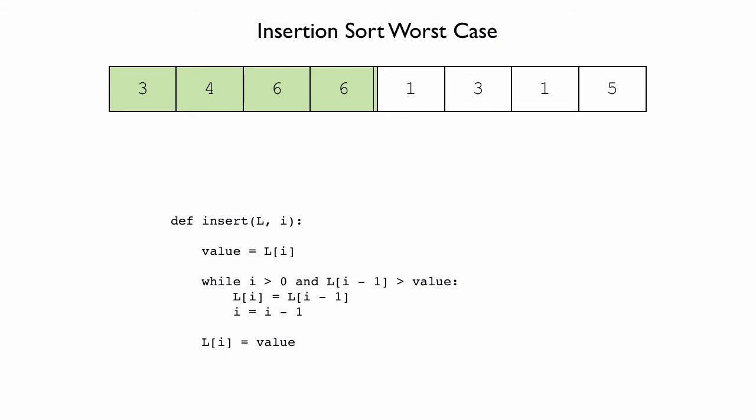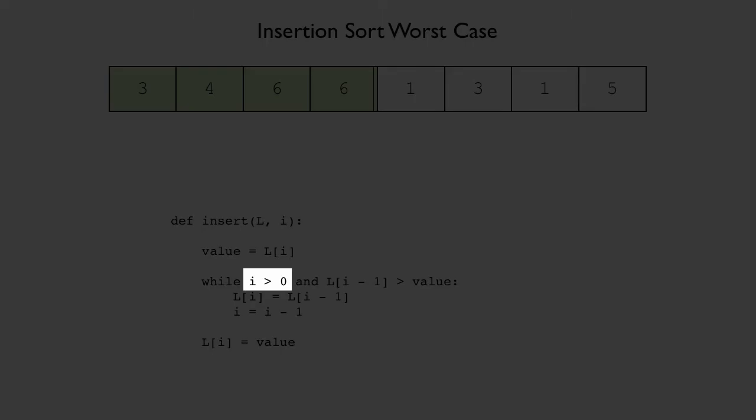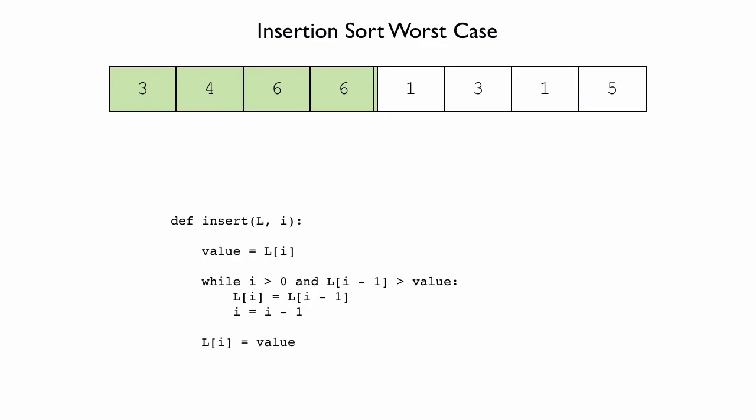How many times does this while loop iterate for the example above, while trying to slot 1 into the sorted part of the list? Because of how we've chosen 1, the second half of the while loop condition — l at i-1 is greater than value — will always be true, all the way to the very beginning of the list. Since 1 is at index 4, we execute once when comparing to 6, once for the other 6, once for 4, and once for 3, going backwards. i will decrease by 1 every time. The last time, when i becomes 0, the first part of the while condition will fail and the loop will not execute. So in total, we are going to run this loop 4 times.